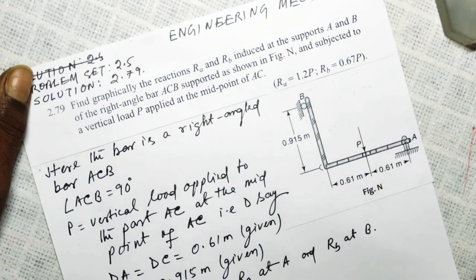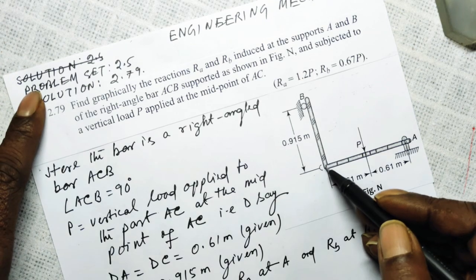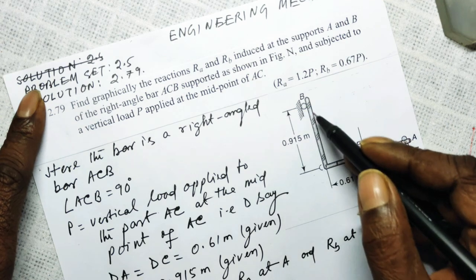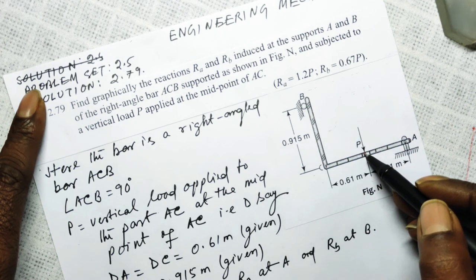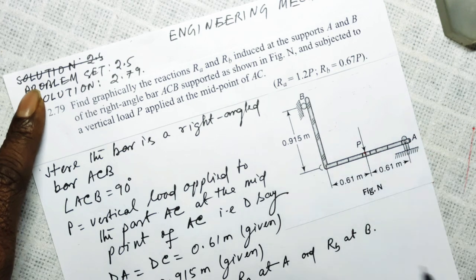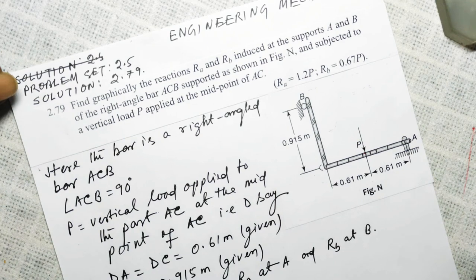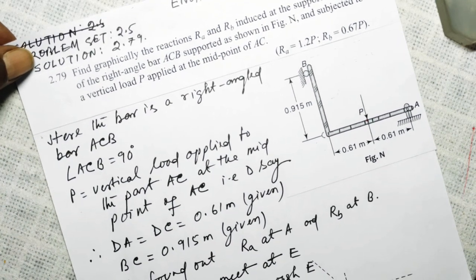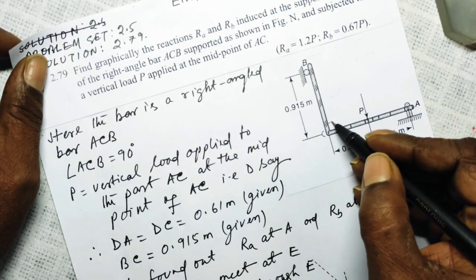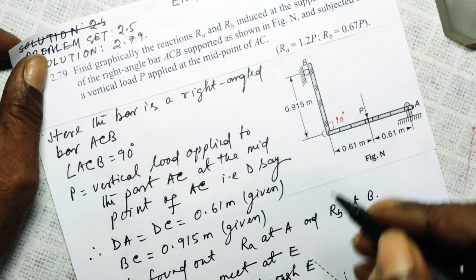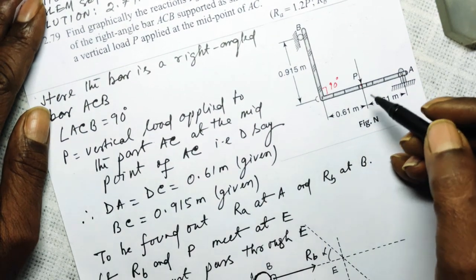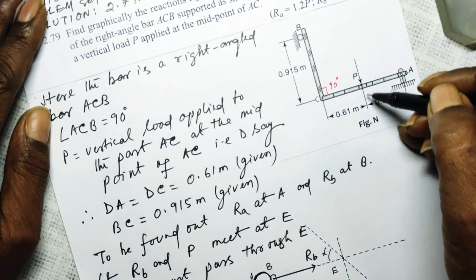We have to find the reaction force at point A and at point B. The bar is subjected to a vertical load P applied at the midpoint of part AC. The bar ACB is right-angled at C, and at the midpoint of side AC there is a vertical load P acting vertically downward.